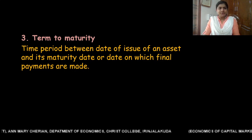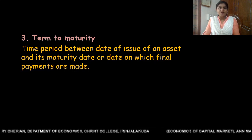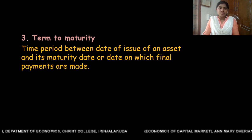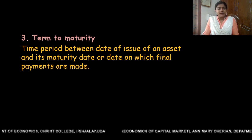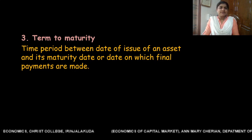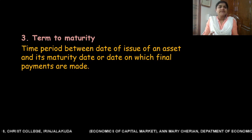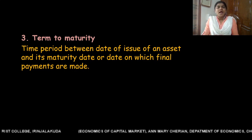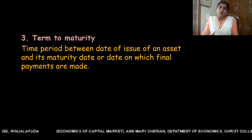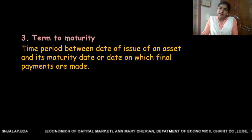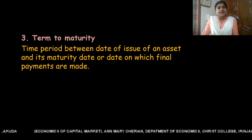The third property is term to maturity. Term to maturity is the time period between the date of issue of a financial asset and its maturity date, or the date on which financial payments are made. The term to maturity of financial assets varies from one asset to another.